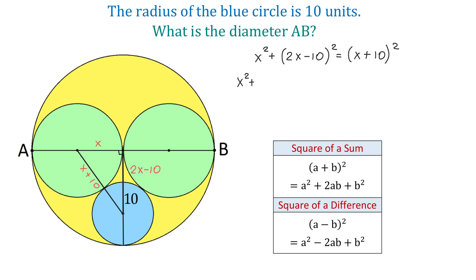So then on the left side, we will bring down X squared plus, and now 2X squared is 4X squared minus. Next, we need 2 times A times B, which is 2 times 2X times 10, and that makes 40X. Then, 10 to the second power is 100.